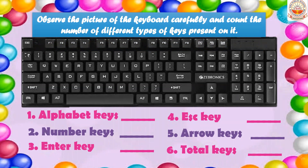The first one is alphabet keys. You all know that alphabets are 26 in number, so obviously the alphabet keys are 26. You have to write 26 in the space.